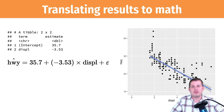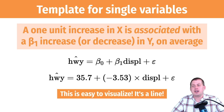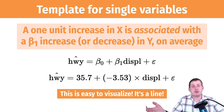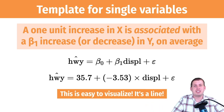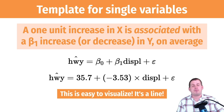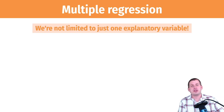The nice thing about this is it's easy to visualize — it's just a line. As displacement goes up, highway miles per gallon goes down. So if you want to visualize the relationship between two variables, do a scatter plot and add a geom_smooth to get a line, and you're good. But in real life you're mostly not going to do single regression with one variable, because you can actually control for a whole bunch of variables.